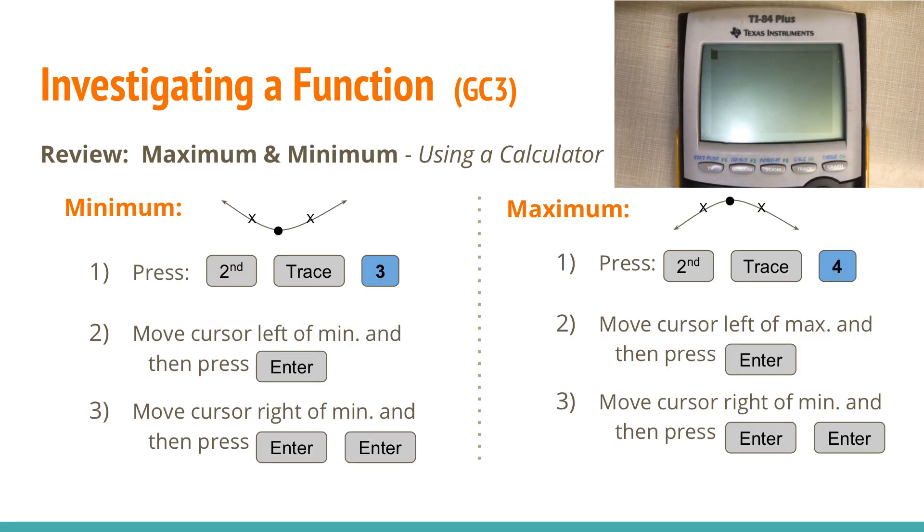The second part in investigating a function is finding the minimums and the maximums of the graph. Sometimes the graphs swerve up and swerve down. What we have to do is be able to find those maximum minimum points. So just to refresh, remember here is what we have to do is press second trace 3.